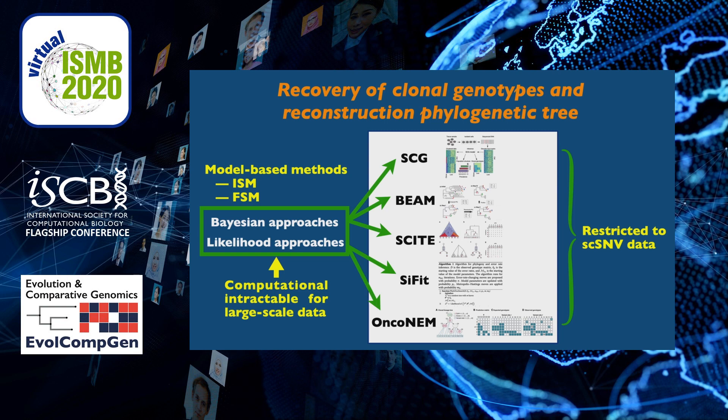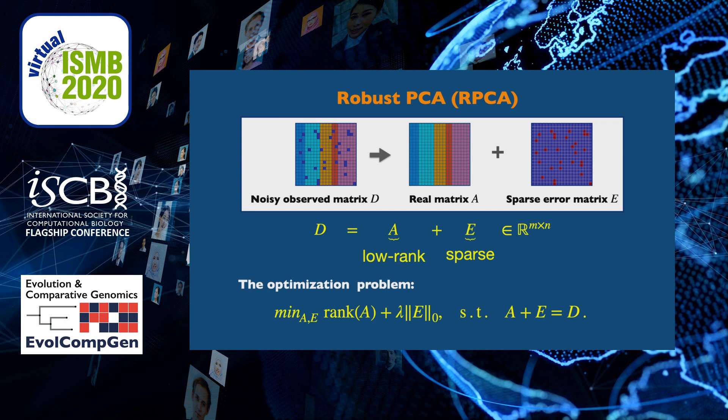In this study, we developed an efficient computational framework termed RobustClone to infer the clonal evolution in tumors from large-scale single-cell sequencing data. It recovers the true genotypes of subclones based on the low-rank matrix decomposition method RPCA, and reconstructs the subclonal evolutionary tree. RPCA is a low-rank matrix factorization method to recover a low-dimensional subspace from corrupted data, which approximates the observed matrix by decomposing it into the sum of a low-rank matrix and a sparse matrix.